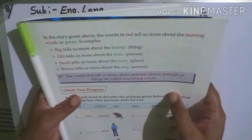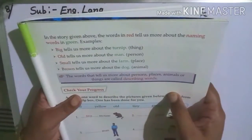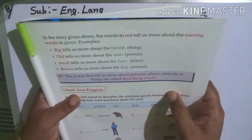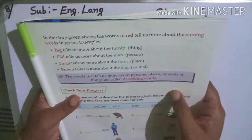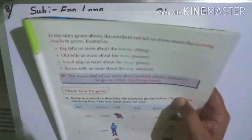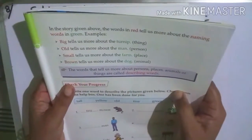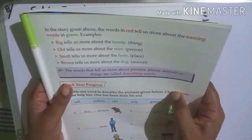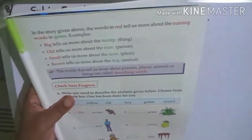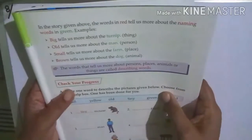Big tells us more about the turnip (thing). Old tells us more about the man (person). Small tells us more about the farm (place). Brown tells us more about the dog (animal).